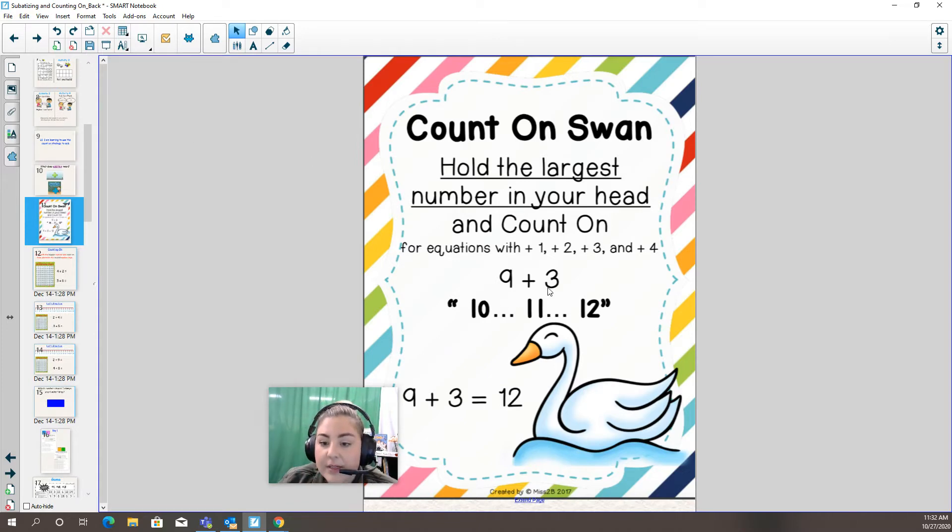For example, we have nine plus three. I'm going to highlight the bigger number. Can you tell me what the bigger number is? Is it nine or three? It's nine. That's right. So I'm going to put that number in my head and count on three times. I put nine in my head and then I use my fingers to keep track. Nine, ten, eleven, twelve. So nine plus three equals twelve.